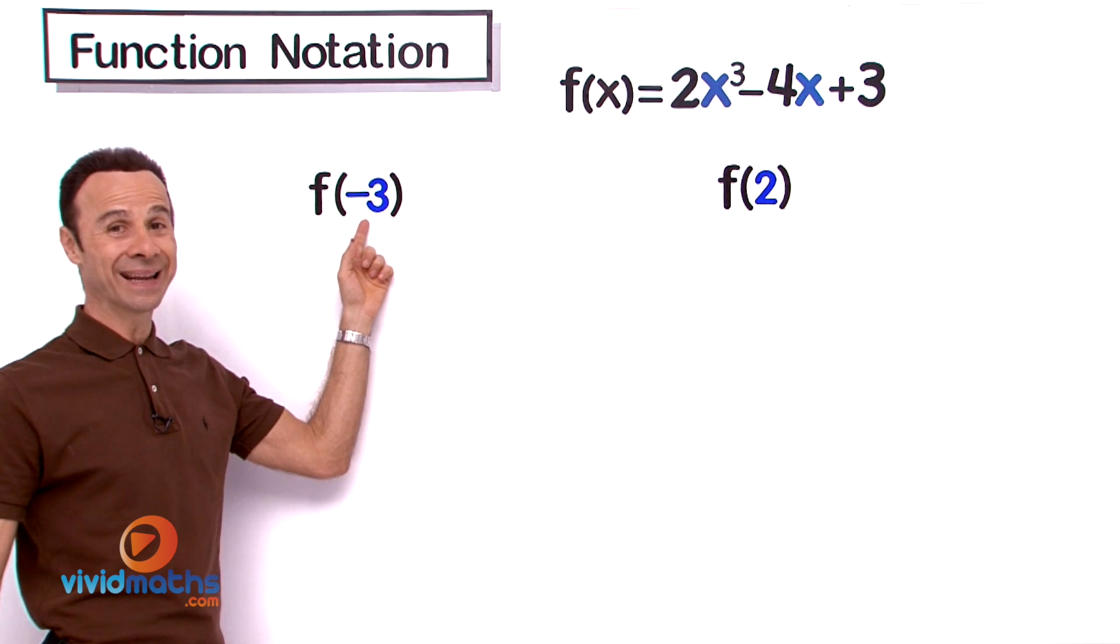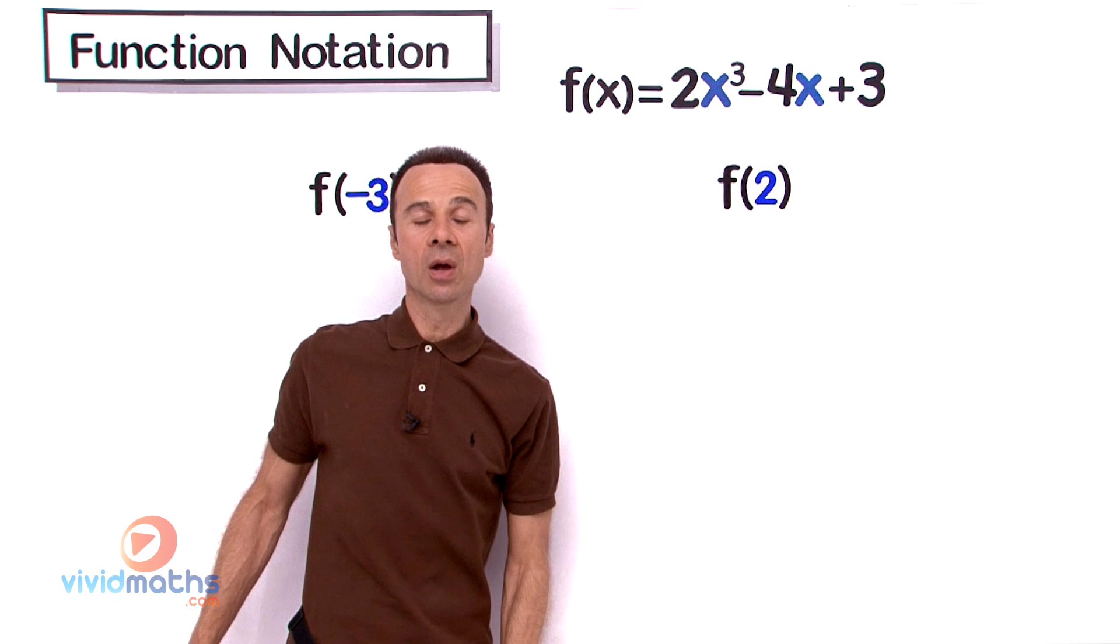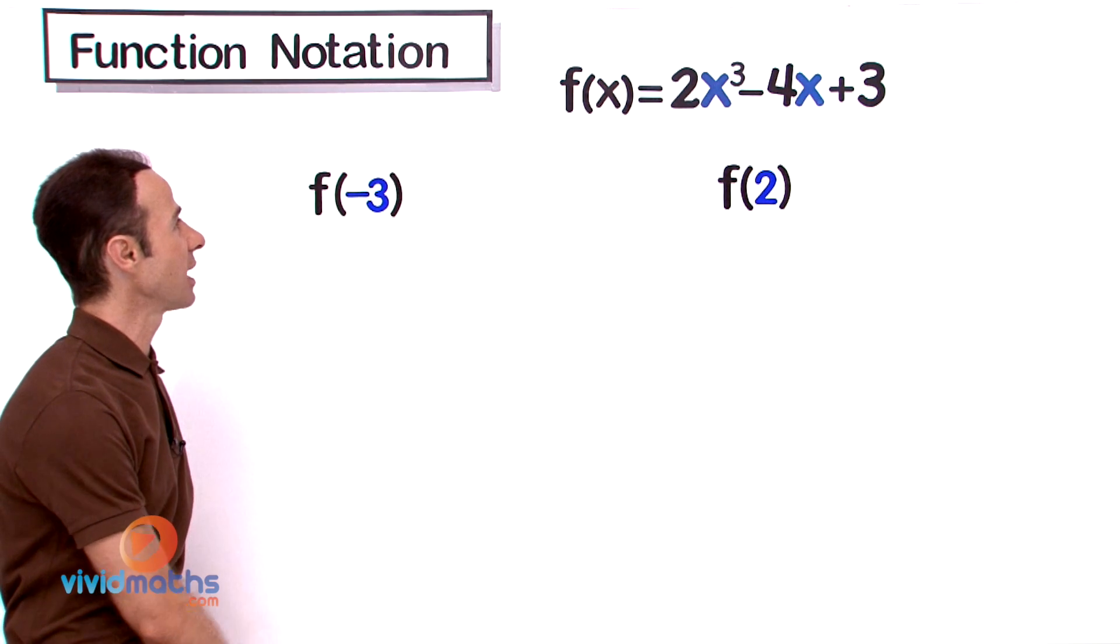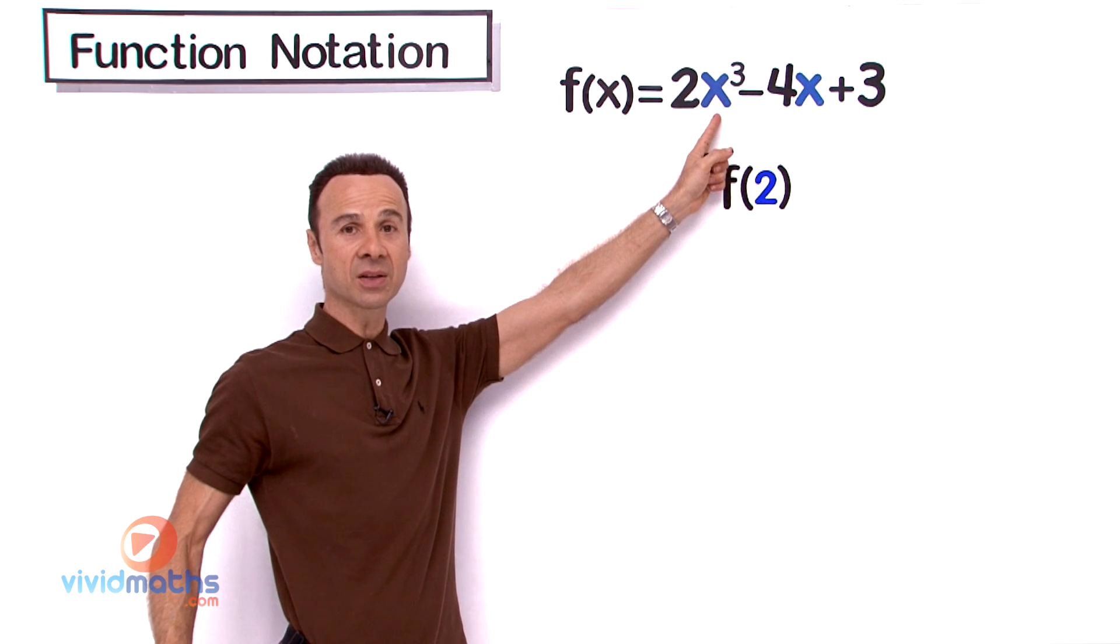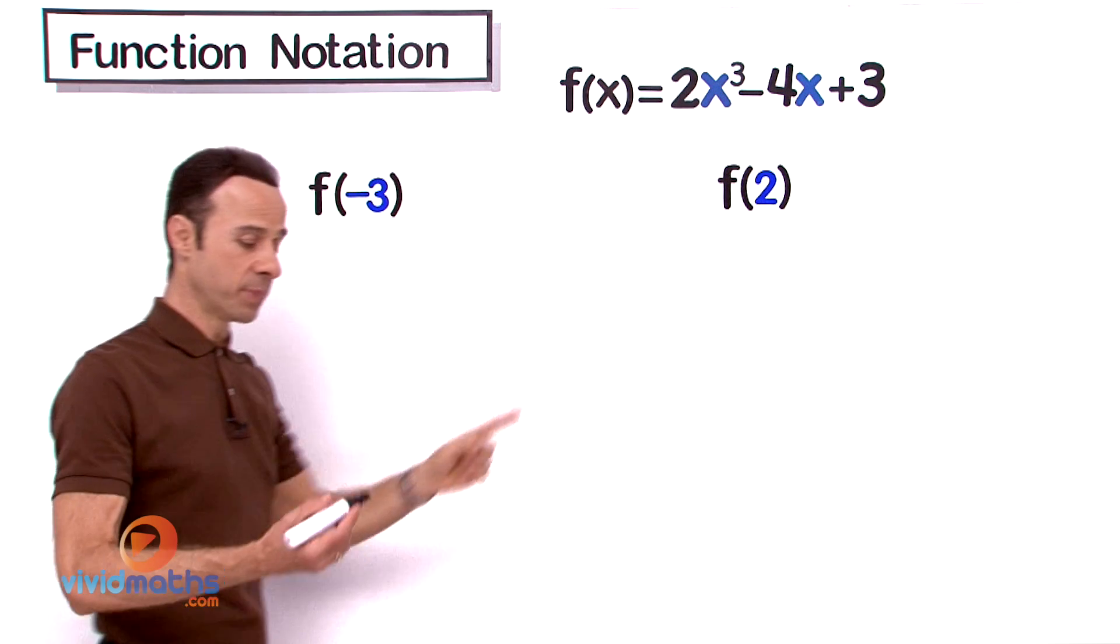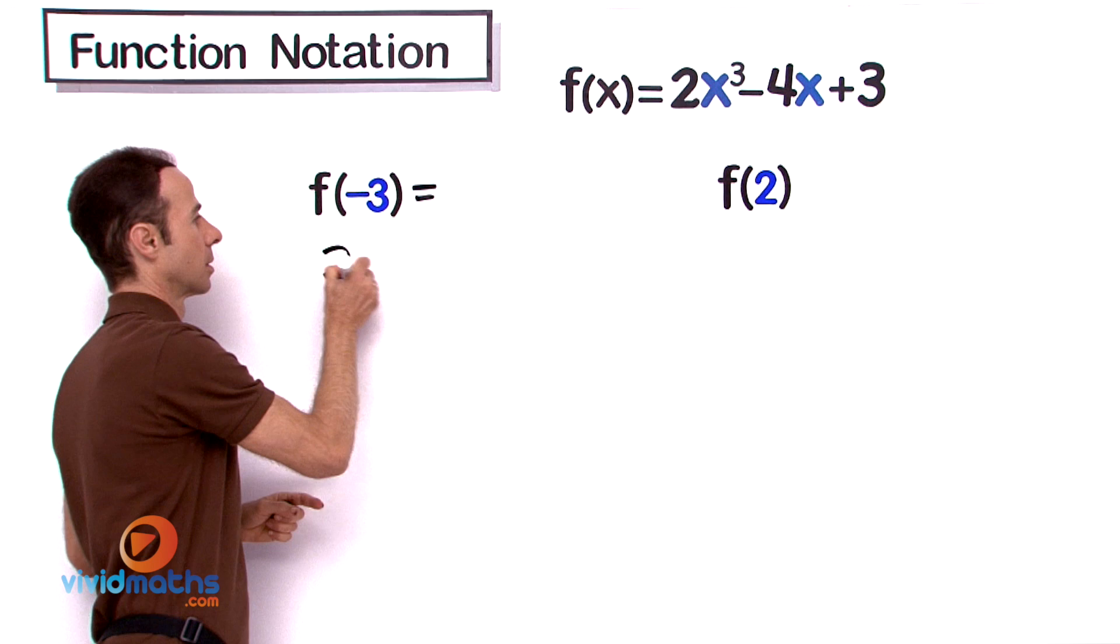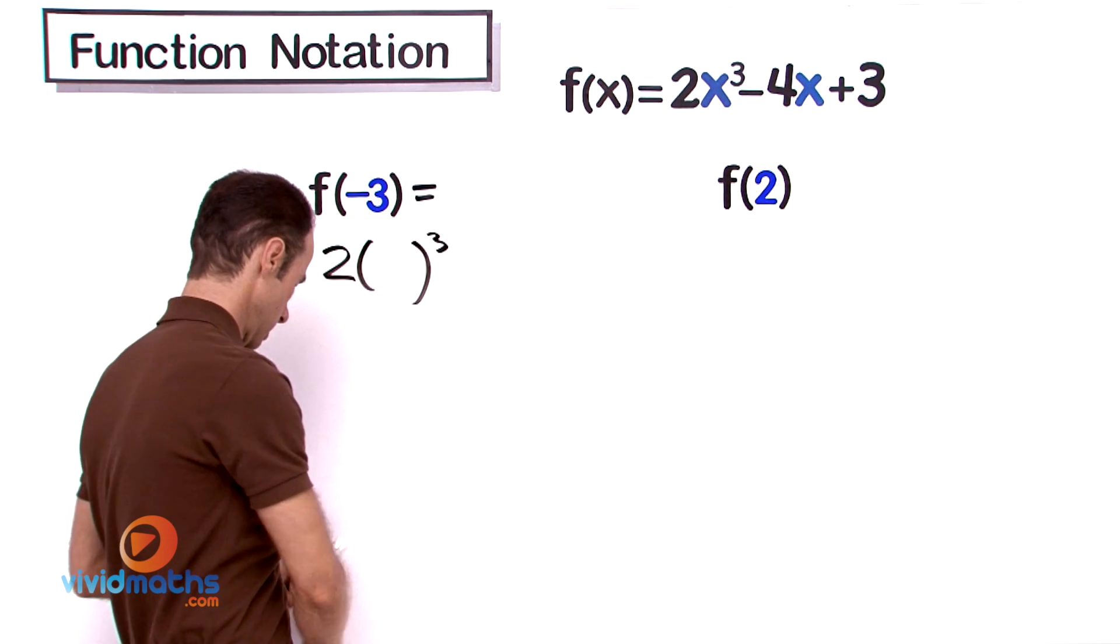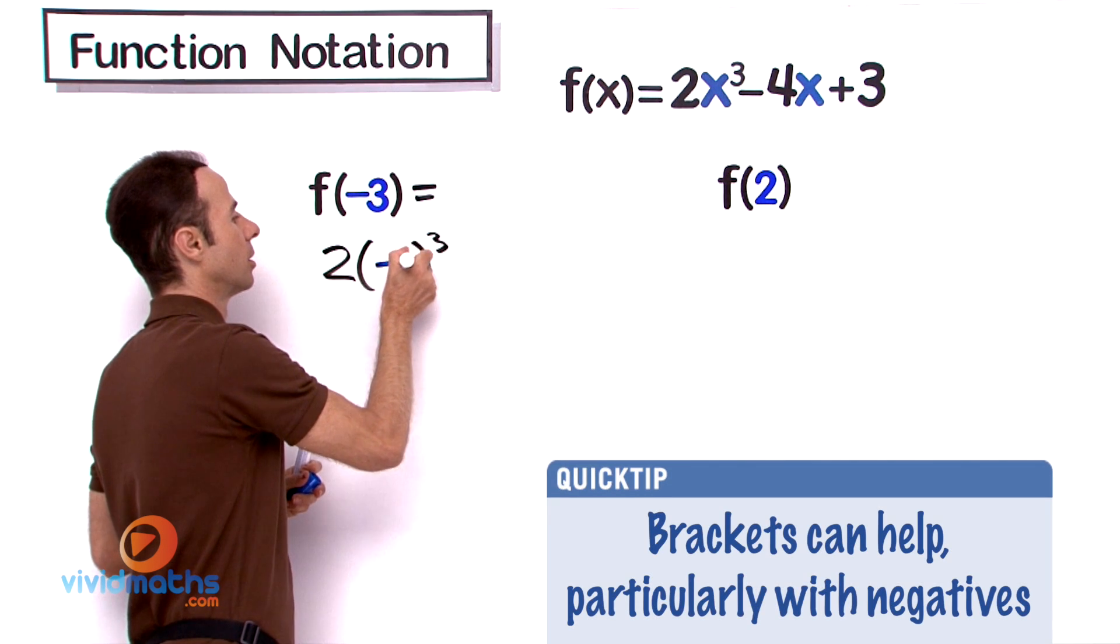Let's begin with negative 3. So if I take negative 3 and substitute it straight there, we see the x, the blue x, it will become negative 3 to the power of 3.